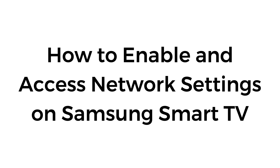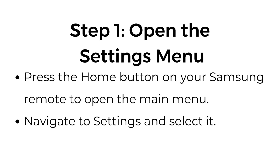How to enable and access network settings on Samsung Smart TV. Step number one: open the settings menu. Press the home button on your Samsung remote to open the main menu, then navigate to settings and select it.